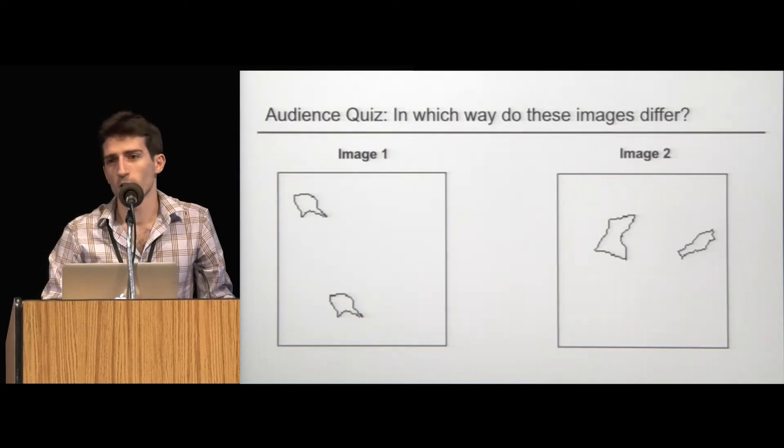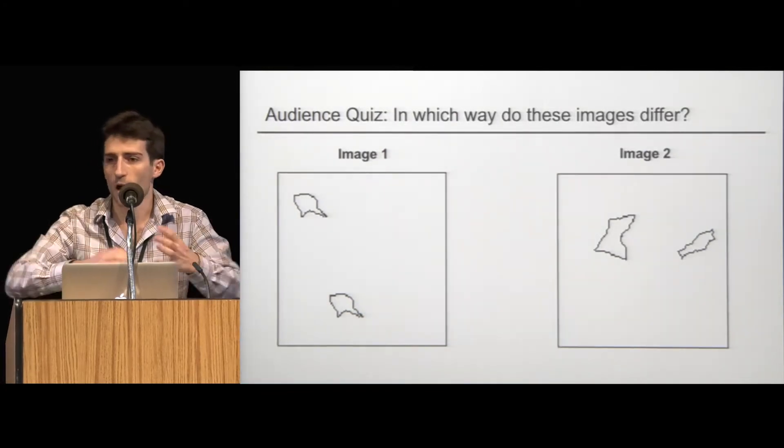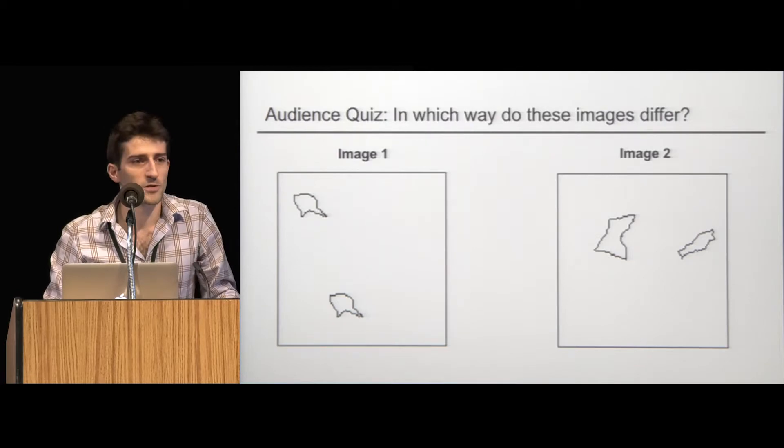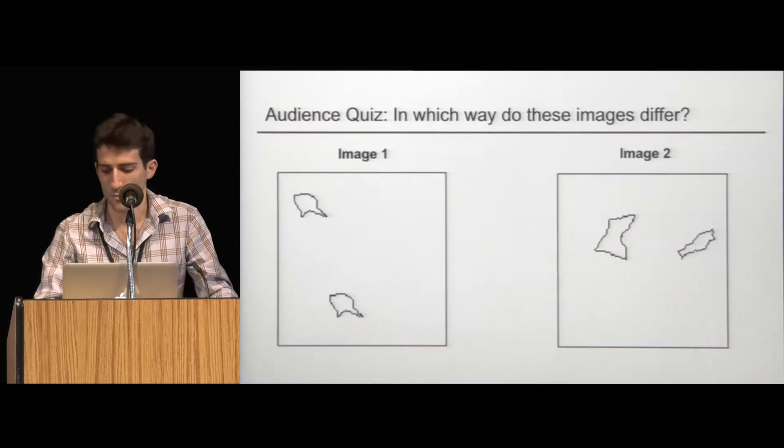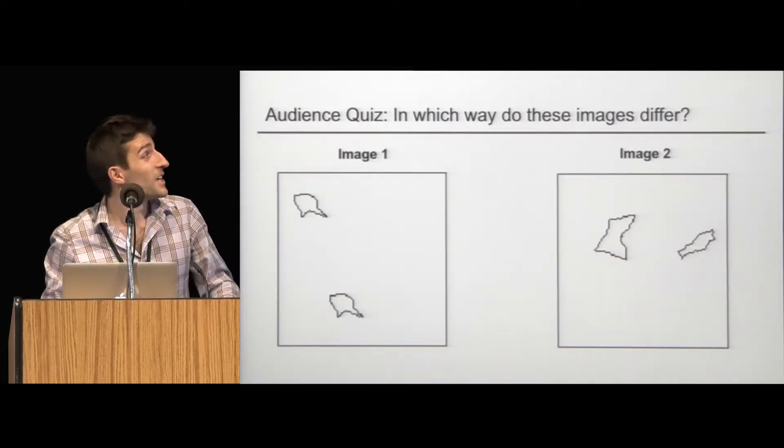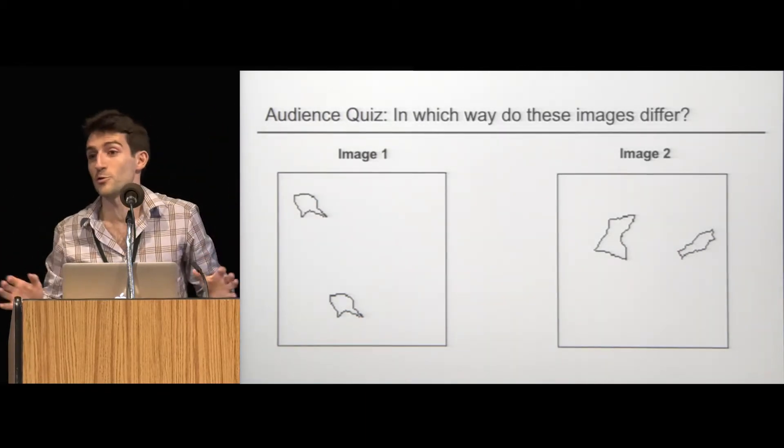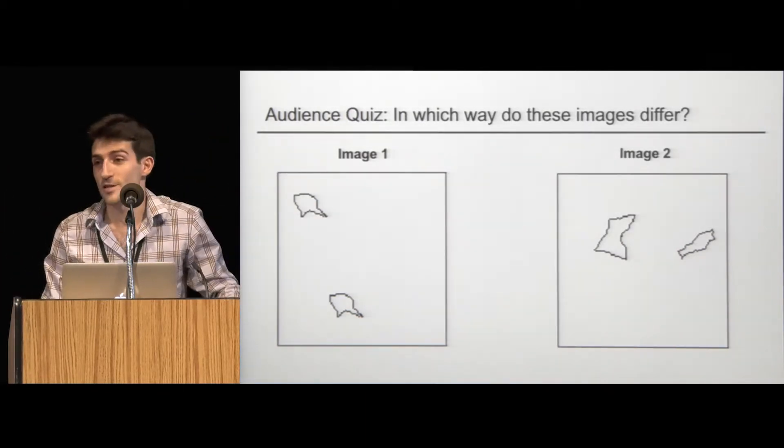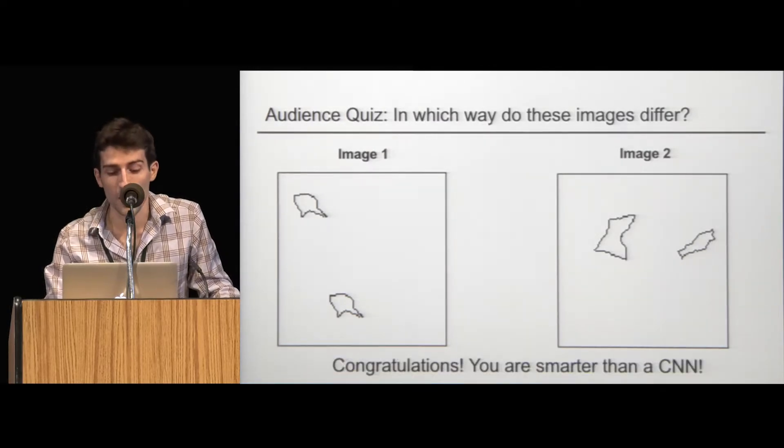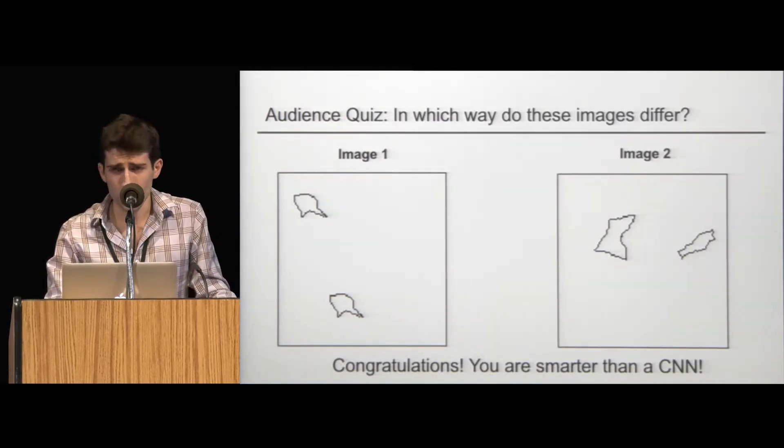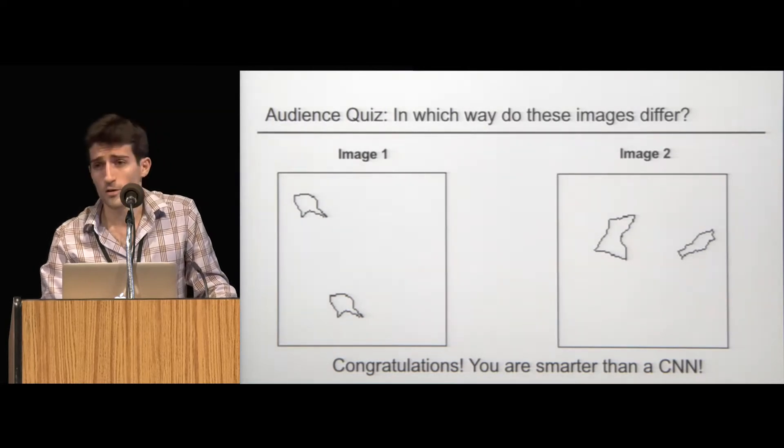Can anybody see something about one image, a property of items in one image that the other image does not have? I hear murmurs. All right. Yes, exactly. You've detected that one image, image one, has two items that are identical up to translation. The other image does not have that property. So I'll say to you, congratulations, you are smarter than a CNN, or so we would like to argue.